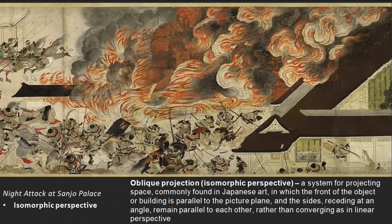Isometric perspective is also called oblique projection. This is a section of a scroll called Night Attack at Sanjo Palace. You can see how the front of the building in the bottom right corner is shown flat and parallel to the picture plane, but as the building recedes back into space, it recedes at oblique parallel angles. These lines are parallel and will never recede to a point together. A lot of Japanese scrolls use this oblique projection.